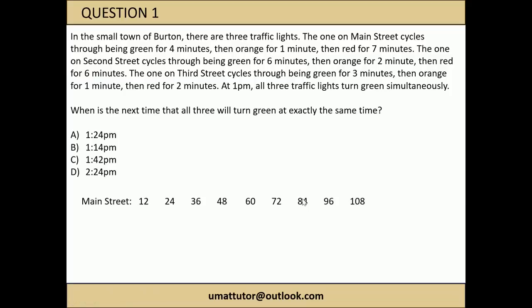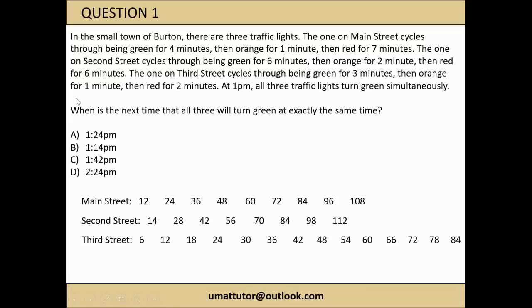It's really just a case of doing the same thing for the other two traffic lights. The 2nd Street one goes 6 minutes then 2 then 6, so that's a 14 minute cycle in total. So we write out 14, 28, 42, 56, 70, 84 and so on. These represent the minutes past 1pm where each traffic light turns green again. For 3rd Street it's in periods of 6 because we've got 3 plus 1 plus 2, so every 6 minutes the 3rd Street one will turn green.